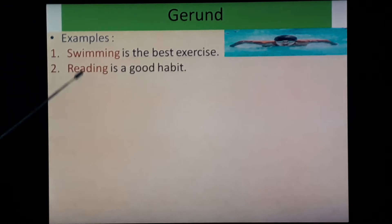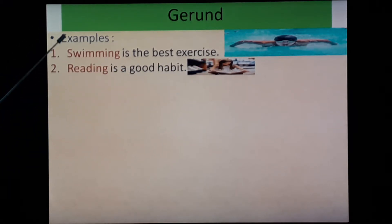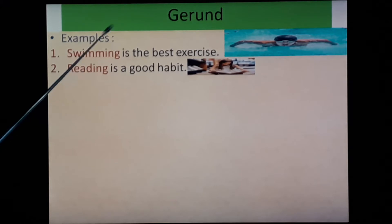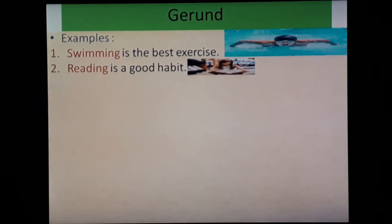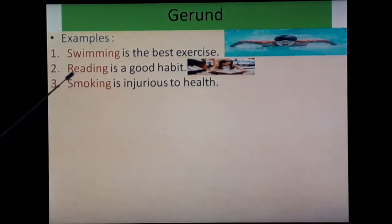Third, 'Smoking is injurious to health.' Here, 'smoking' — smoke, V1 form, plus -ing — becomes a gerund. Fourth, 'He likes running.' Here 'likes' is the verb and 'running' — run plus -ing — is the gerund. Here it works as an object of a verb. Next, 'I am thinking of running.' Here 'of' is a preposition, and 'running' is the gerund — it works as an object of a preposition.